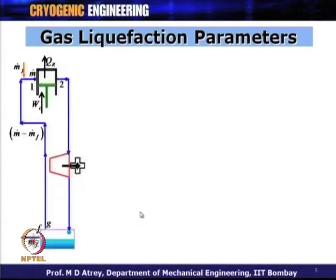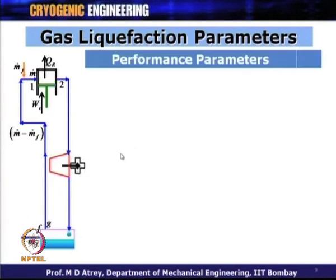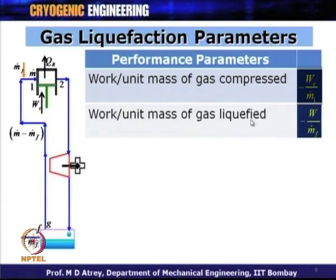In a typical cycle, m-dot of gas is compressed, out of which m-dot-f gets liquefied. The gas returning to the cycle is m-dot minus m-dot-f, and a make-up replenishment of m-dot-f is added. The first parameter is work required per unit mass of gas compressed: minus W_c upon m-dot. The second parameter is work per unit mass of gas liquefied: minus W_c upon m-dot-f.